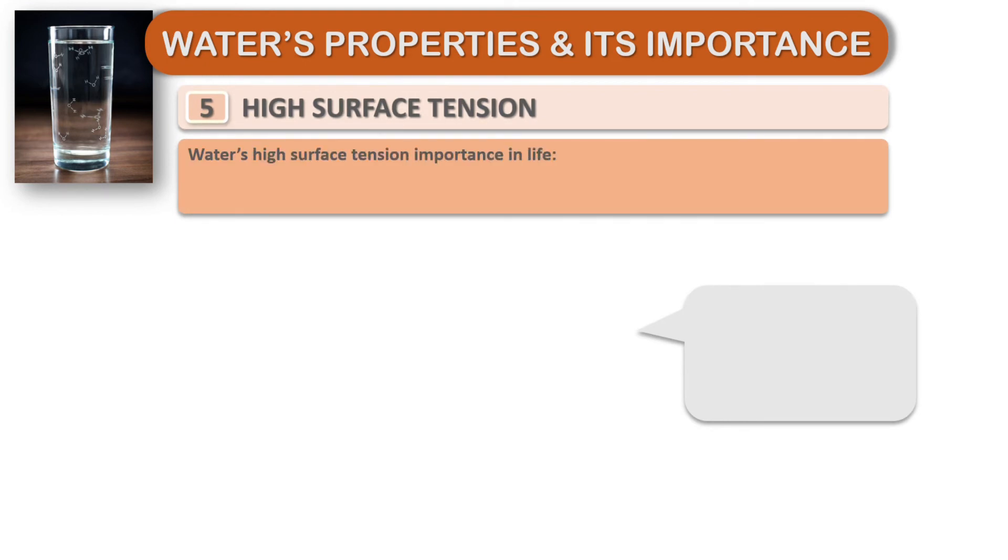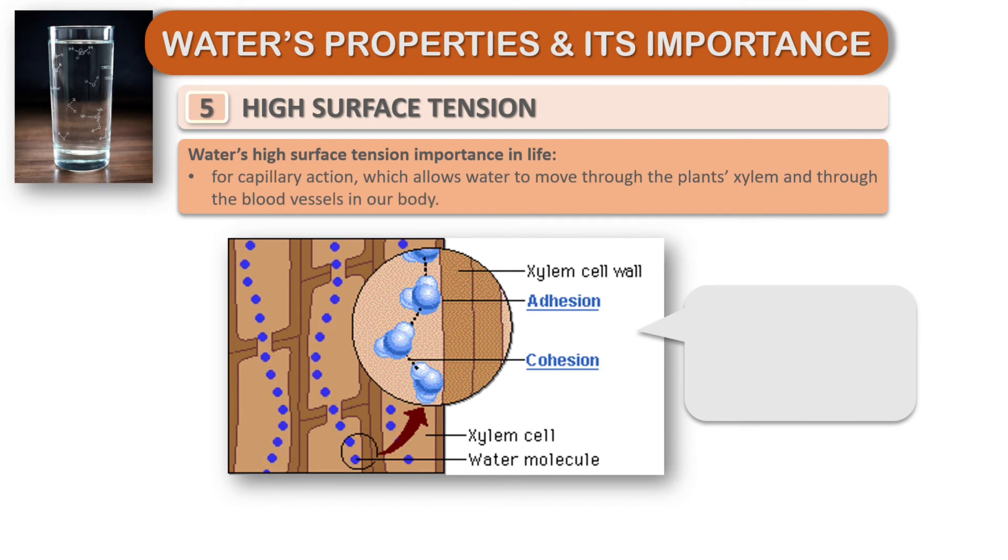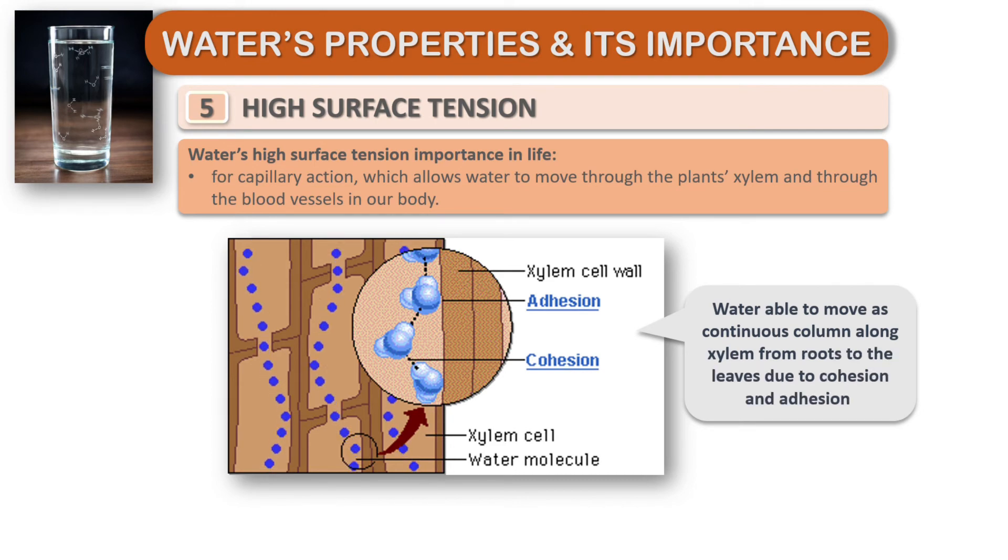Water's high surface tension is important in life for capillary action, which allows water to move through the plant's xylem and through blood vessels in our body. Water is able to move as a continuous column along xylem from roots to leaves due to adhesion and cohesion.